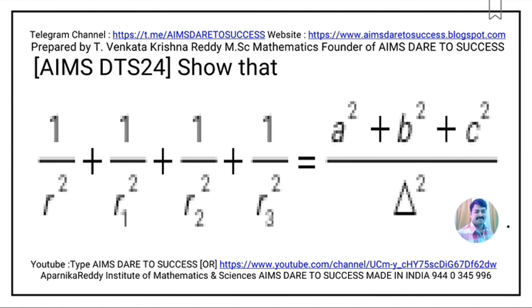Question 24: Show that 1/r² + 1/r₁² + 1/r₂² + 1/r₃² = (a² + b² + c²)/Δ². These are all 7 long answer questions for Section C.